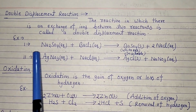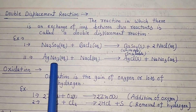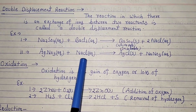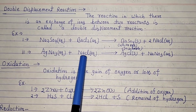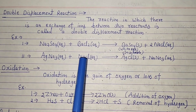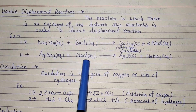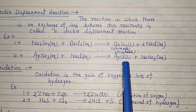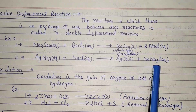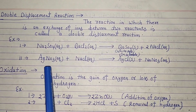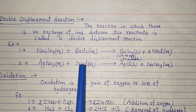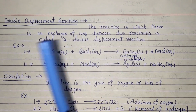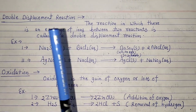Next example: silver nitrate and sodium chloride — two reactants whose ions interchange. Silver chloride and sodium nitrate are formed. Since the ions interchange between two reactants, this reaction is called a double displacement reaction.